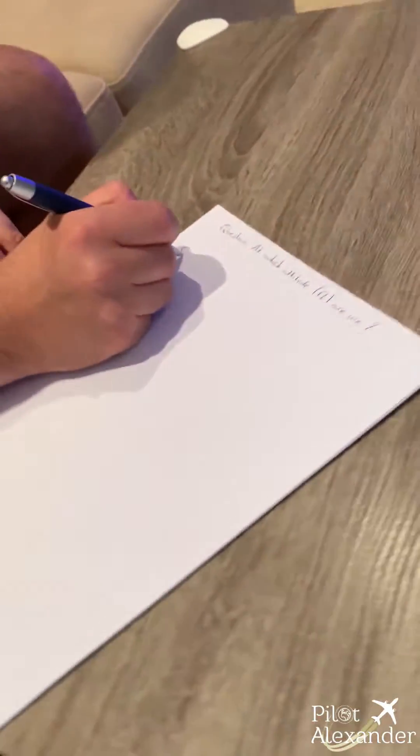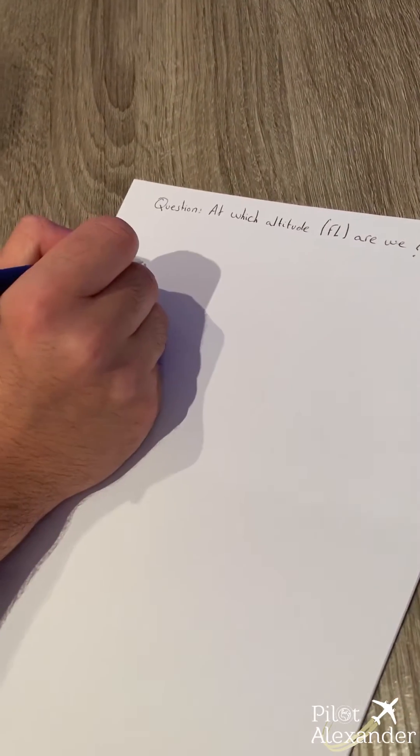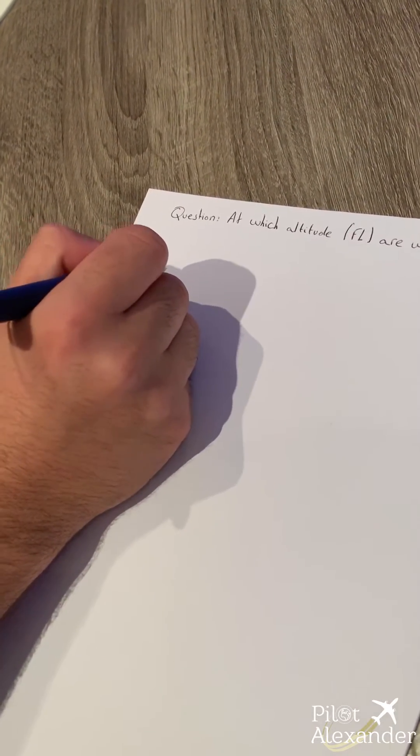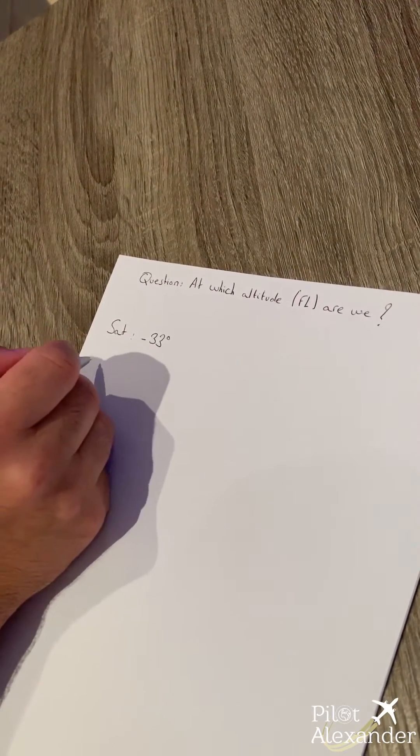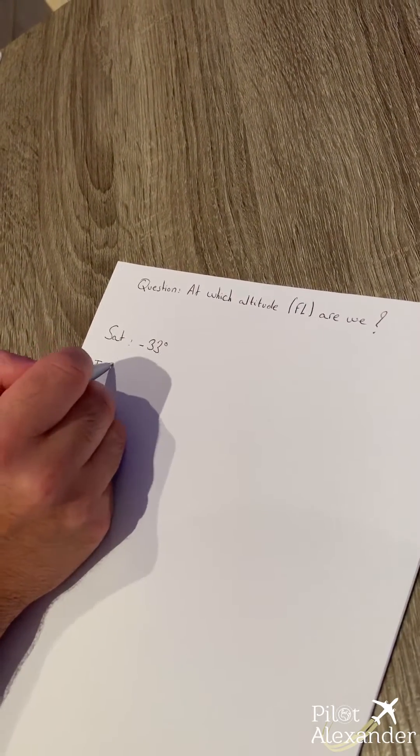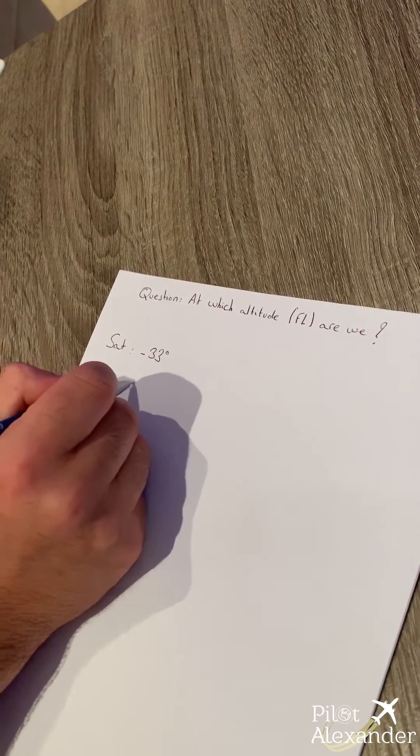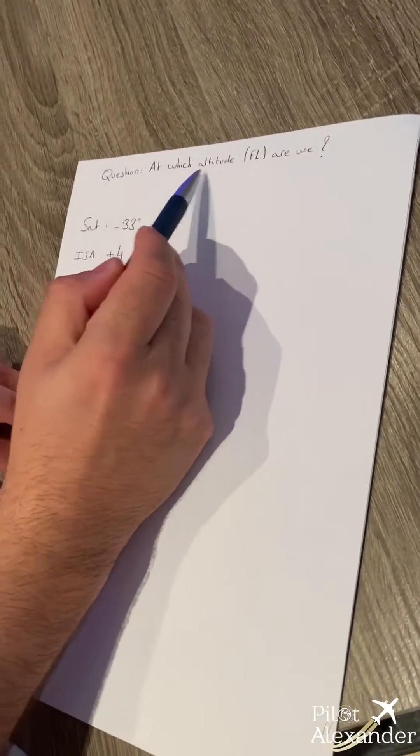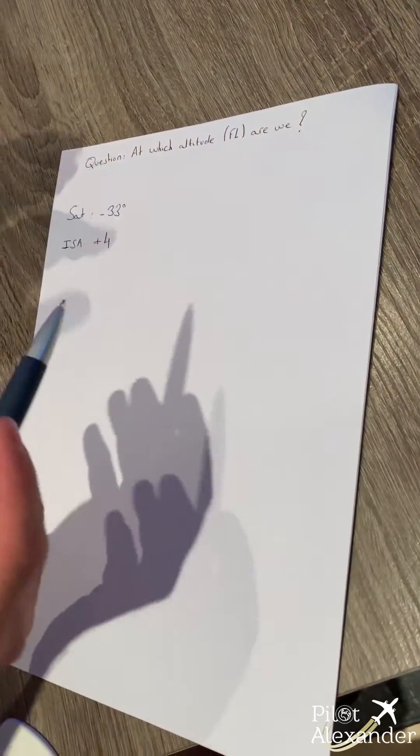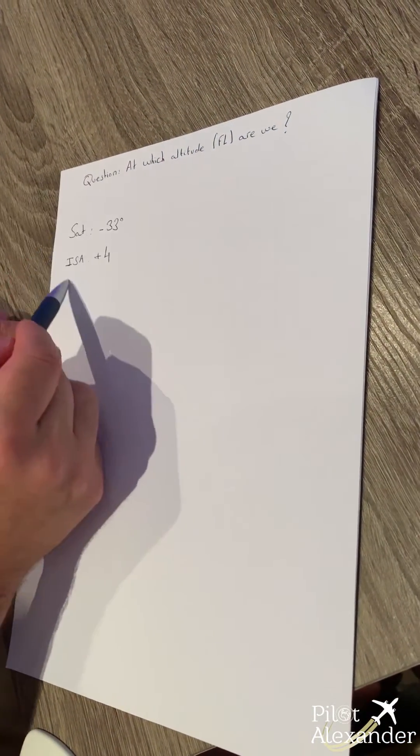We've got two information. We've got a SAT, so static air temperature of minus 33 degrees and the ISA deviation of plus four. So the question was at which altitude or flight level are we? With this can we find the answer?